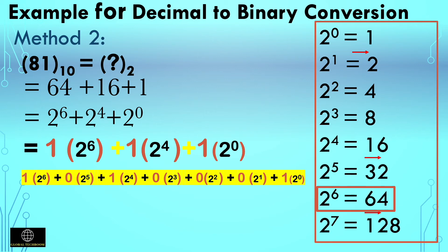You can verify this result: 1×64 + 0×32 + 1×16 + 0×8 + 0×4 + 0×2 + 1×1 equals 64 + 16 + 1, which equals 81. So 1 0 1 0 0 0 1 is the binary equivalent of 81 in decimal.